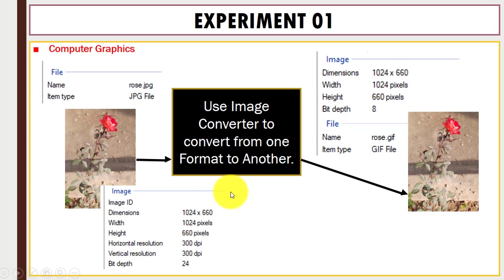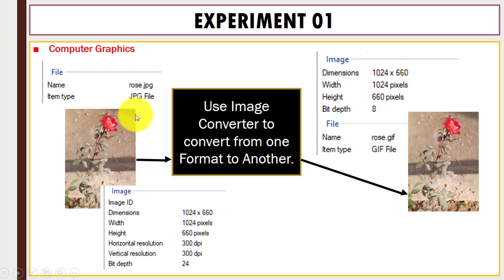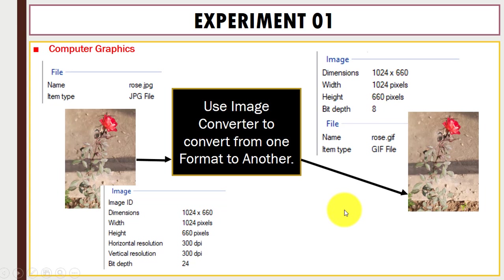Next, when you convert this into GIF format, you can see again there are changes in the bit depth. In the JPG file format the bit depth is 24, and in GIF it is 8.